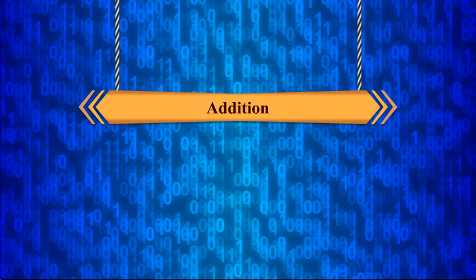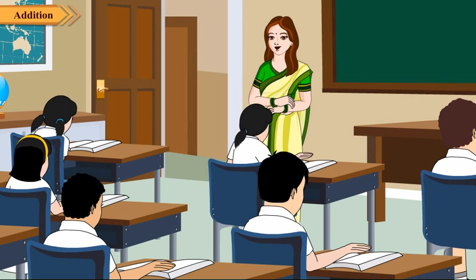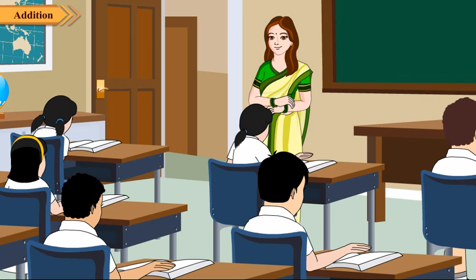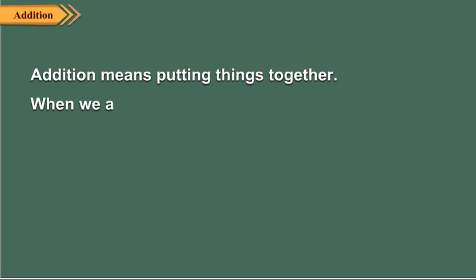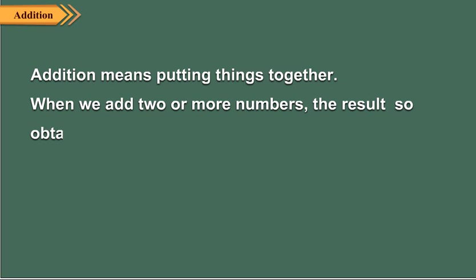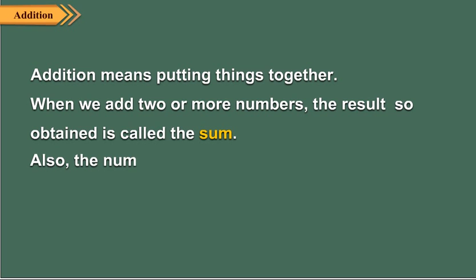Addition. Hello children! In the previous classes, you have read a lot about addition. Do you remember all the basic terms related to addition? Addition means putting things together. When we add two or more numbers, the result so obtained is called the sum. Also, the numbers added are called addends.